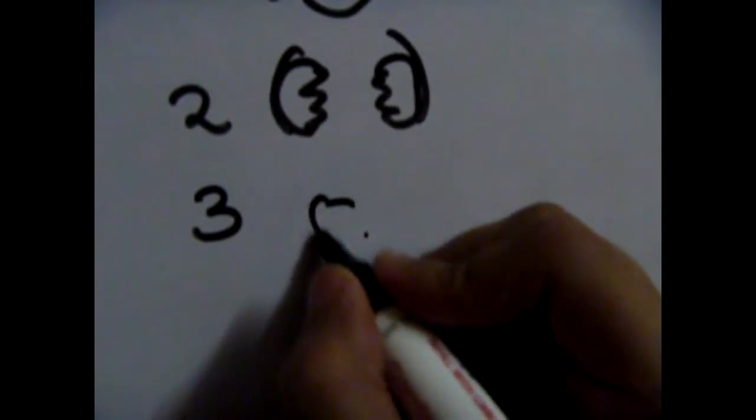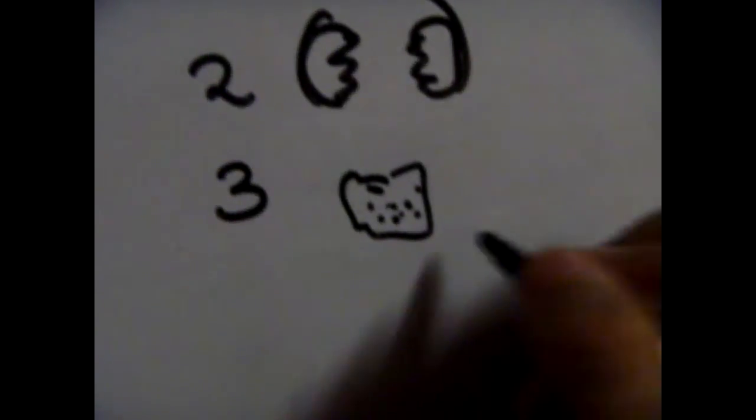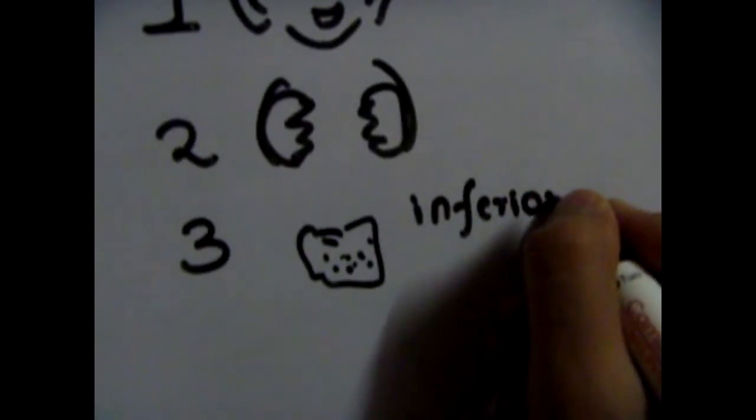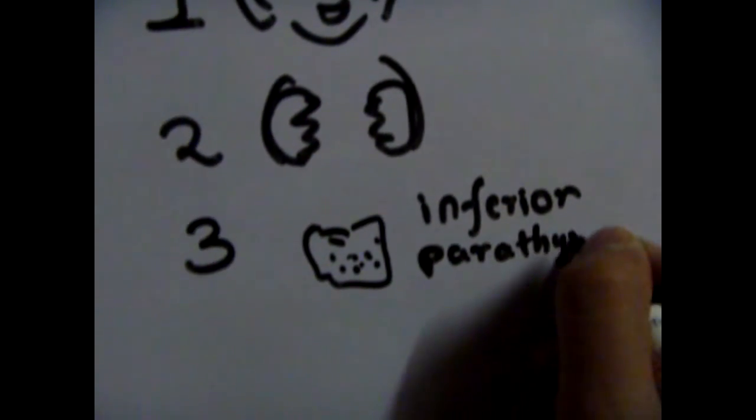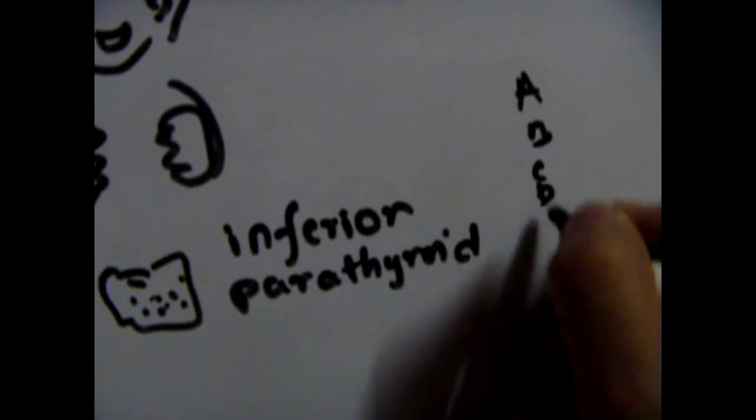The third branchial pouch gives rise to the thymus, and it also gives rise to the inferior parathyroid glands. I know it's kind of confusing because superior comes first, but in this case, I remember it as if you go alphabetically: A, B, C, D, E, F, G, H, I—I comes first and then comes S.